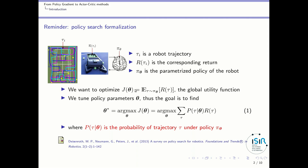We want to optimize the global utility function g of theta, which is the expectation over all trajectories of the reward corresponding to those trajectories. We want trajectories that bring as much reward as possible. For that we will tune the policy parameter theta. The goal is to find theta star — the best set of policy parameters — which maximizes the global utility function, rewritten as the sum over all trajectories of the reward multiplied by the probability of that trajectory given parameters theta.